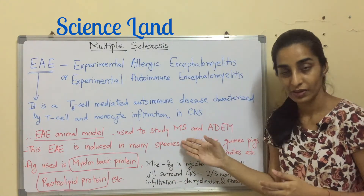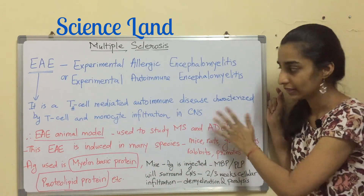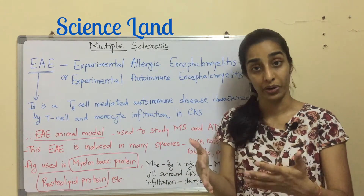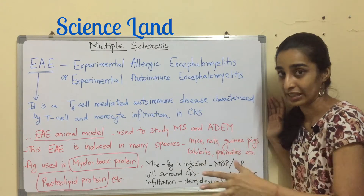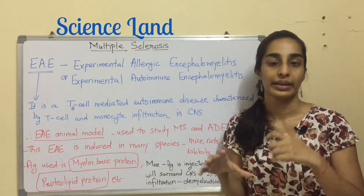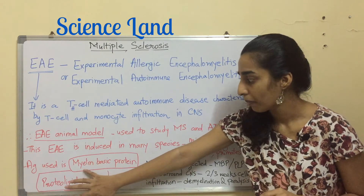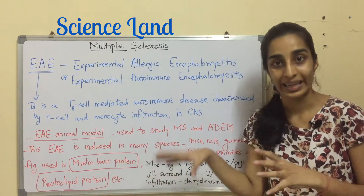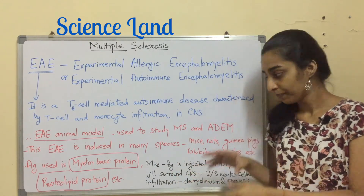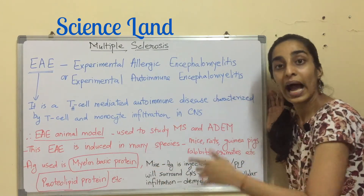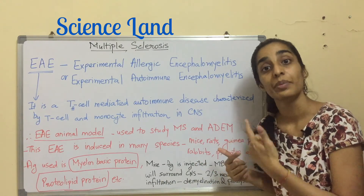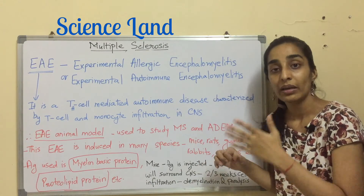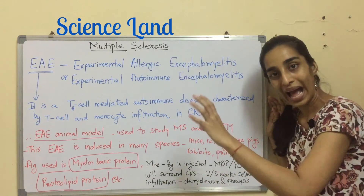The EAE animal model is also used to study ADEM, but let's keep that aside. EAE can be induced in different species — mice, rats, guinea pigs, rabbits, primates, etc. Once you have the animal model, you inject an antigen. Common antigens used are myelin basic protein (MBP) and proteolipid protein (PLP). This antigen is co-injected along with an adjuvant — for example, using mice with MBP, the adjuvant enhances the immune response and helps in breaking the BBB.